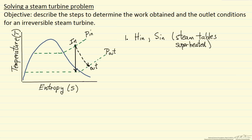Our second step is to do the calculation for the reversible case and determine the outlet condition. I'm going to call this point outlet prime. This dashed line represents the irreversible case, which corresponds to the actual process we are interested in. For the reversible outlet, S prime at the outlet is going to be the same as S in, because it's reversible and adiabatic.